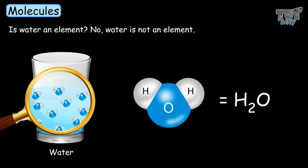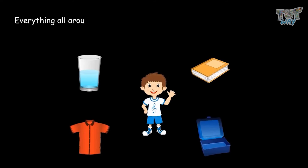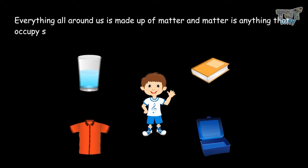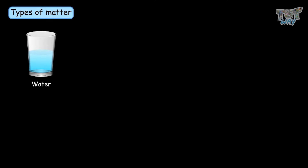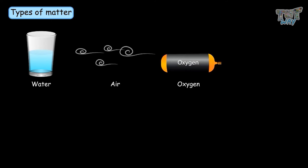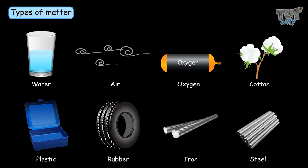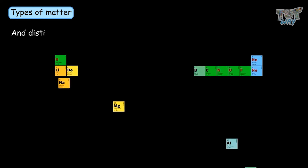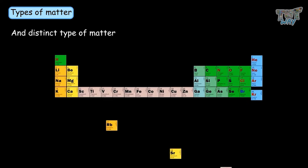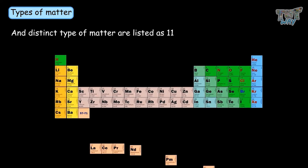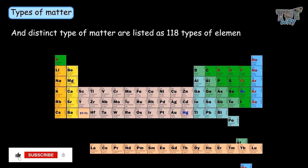So let's revise it all again. Everything all around us is made up of matter, and matter is anything that occupies space and has mass. So water, air, oxygen, cotton, plastic, rubber, iron, steel — all of these are types of matter. And distinct types of matter are listed as 118 types of elements in the periodic table.